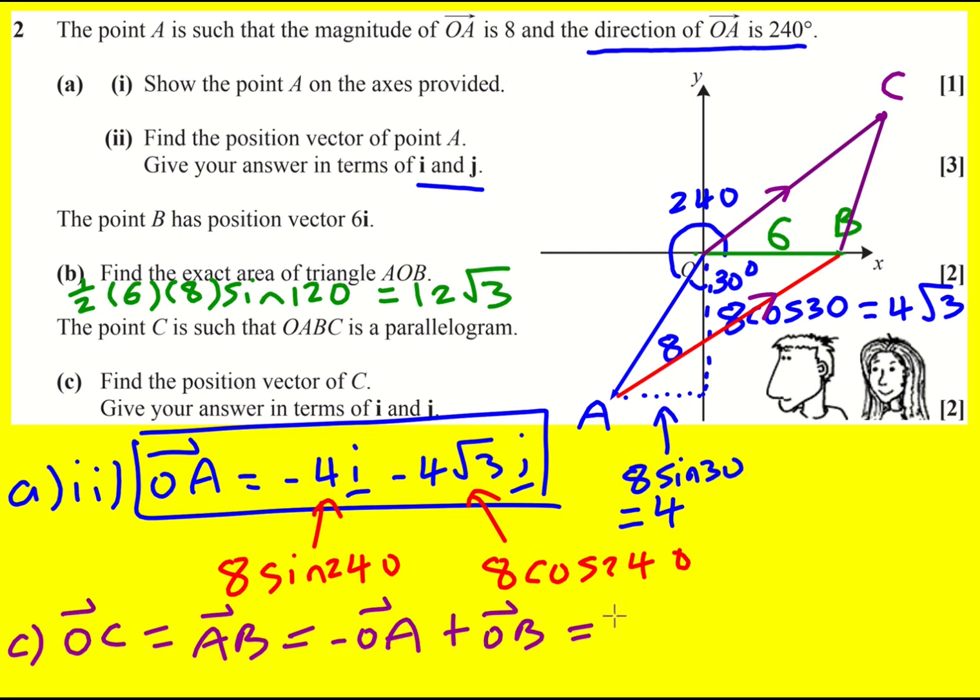OB is 6i, and then I'm going to be subtracting that vector from the start: minus minus 4i minus 4 root 3 j. Double negative here gives us 10i, and double negative there gives us plus 4 root 3 j.